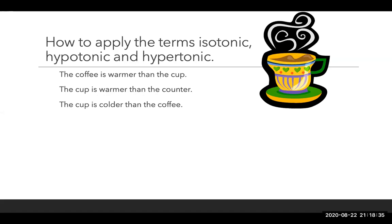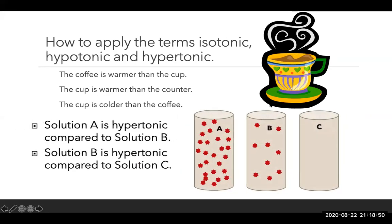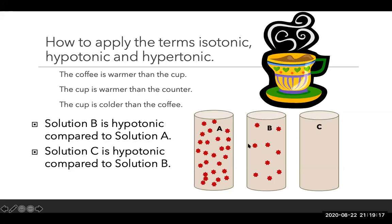To apply these terms, think of coffee in a cup — the coffee is warmer than the cup, and the cup is warmer than the counter, but the cup is still colder than the coffee. Similarly, solution A is hypertonic compared to solution B because it has more solute molecules. Solution B is hypertonic compared to solution C because B has a greater number of solute molecules than C. Solution B is hypotonic to solution A, and solution C is hypotonic compared to solution B.